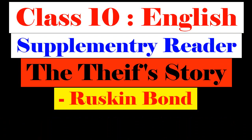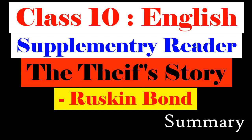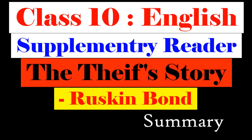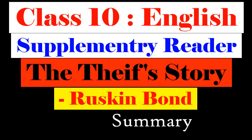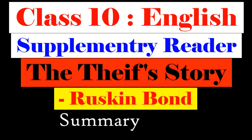Now let's move to the summary. Anil was a 25-year-old writer living his life very carelessly. He was struggling to write for earning money to run his life. One day Anil was watching a wrestling match when he met Hari.